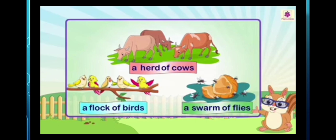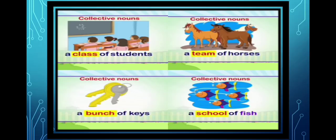This will be more clear by following examples. Like, a herd of cows, a flock of birds, a swarm of flies. The words herd, flock, swarm are used to refer to groups of cows, birds and flies respectively. Let us look at some more collective nouns. First one, a class of students. Second, a team of horses. Third, a bunch of keys. And the last one is a school of fish.